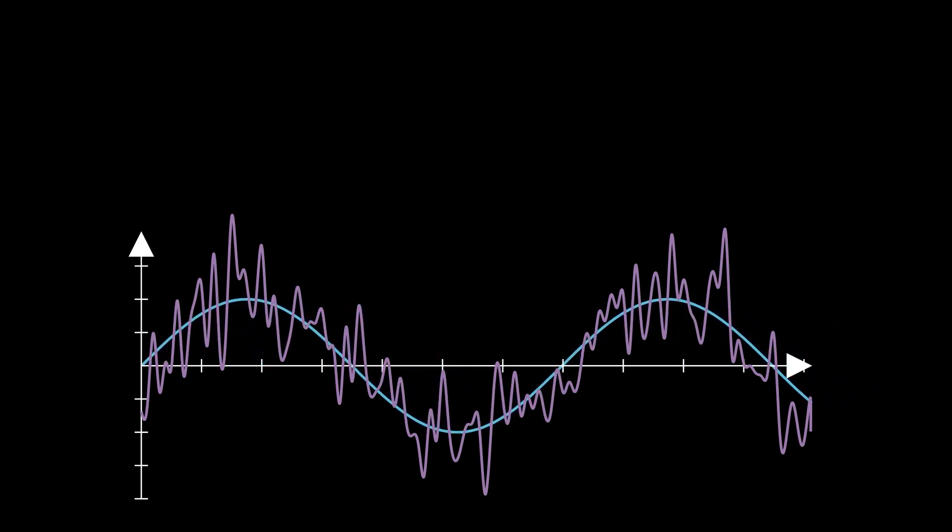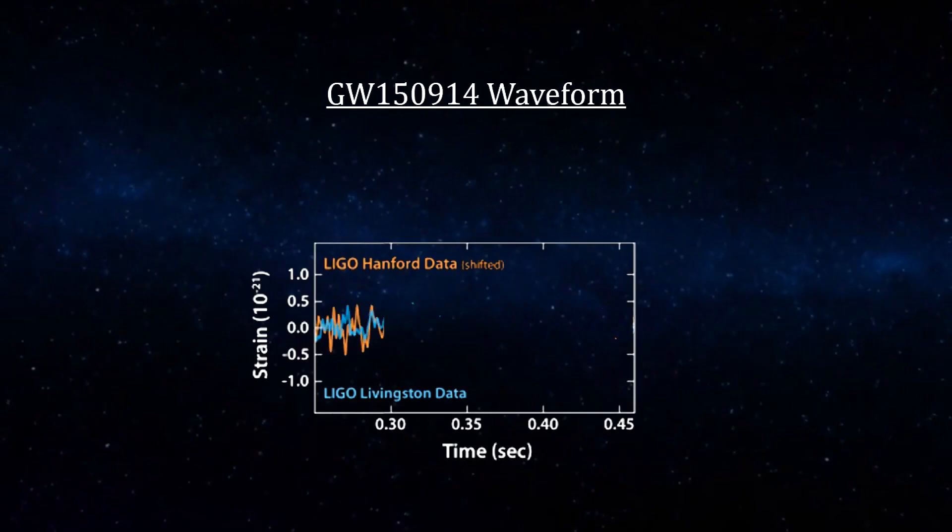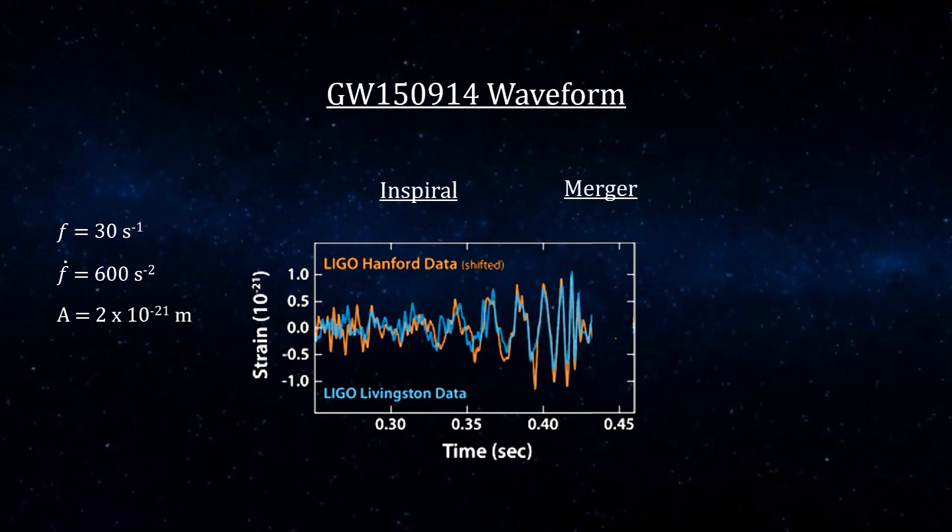The signal is usually described as a chirp. As the black holes spiral in towards one another, gravitational waves are produced spiraling outwards from the pair. The frequency of these waves is proportional to the distance between the black holes. When the pair finally merges, a final set of waves is released. The chirp moniker derives from converting the signal into audible frequencies, which gives this sound.